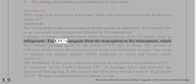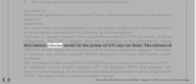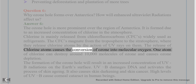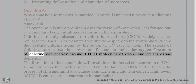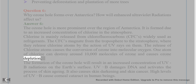CFCs migrate from the troposphere to the stratosphere, where they release chlorine atoms by the action of UV rays. The release of chlorine atoms causes the conversion of ozone into molecular oxygen. One atom of chlorine can destroy around 10,000 molecules of ozone, causing ozone depletion.